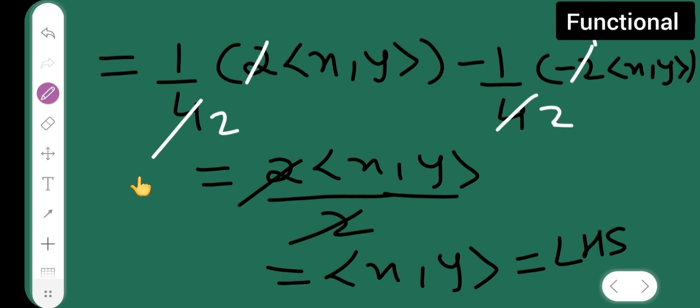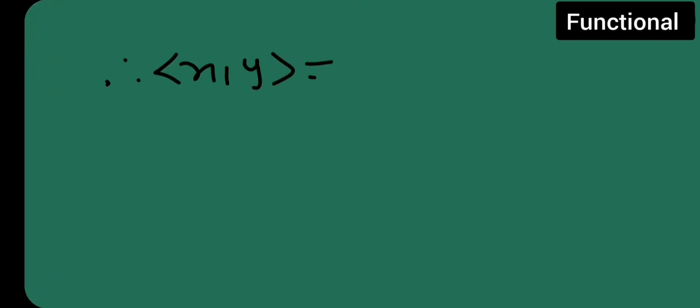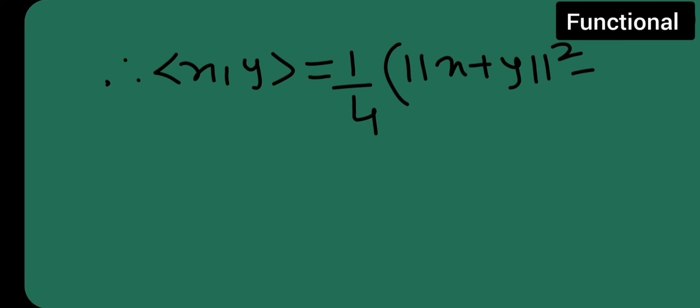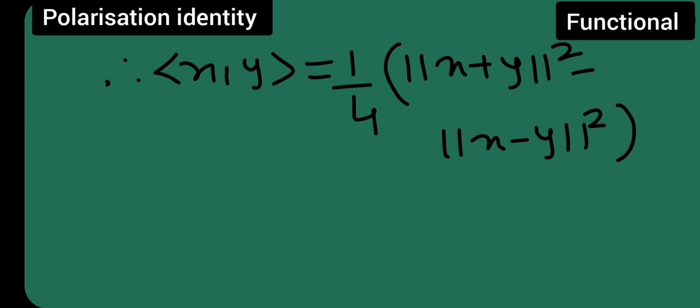Therefore, I can write: inner product of x comma y is equal to 1 upon 4, in the bracket, norm of x plus y the whole square minus norm of x minus y the whole square. So, we are done with the polarization identity. I hope you all understood. If you have not understood any of the concept, you can comment below. Thanks for watching.